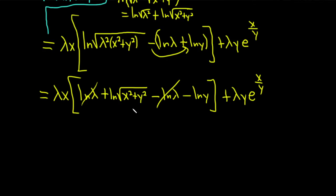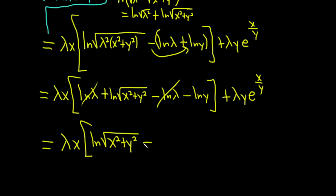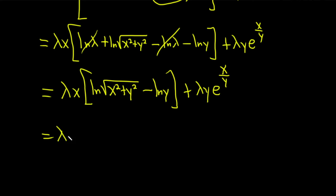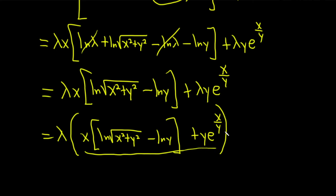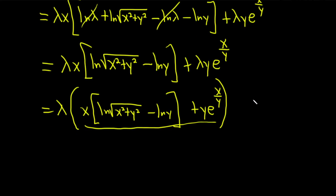Now we can pull out the lambda from everything. We get lambda times x times the bracket natural log of the square root of x squared plus y squared minus the natural log of y, plus y times e to the x over y. The expression in parentheses is exactly our original function f(x, y), which is what we started with.